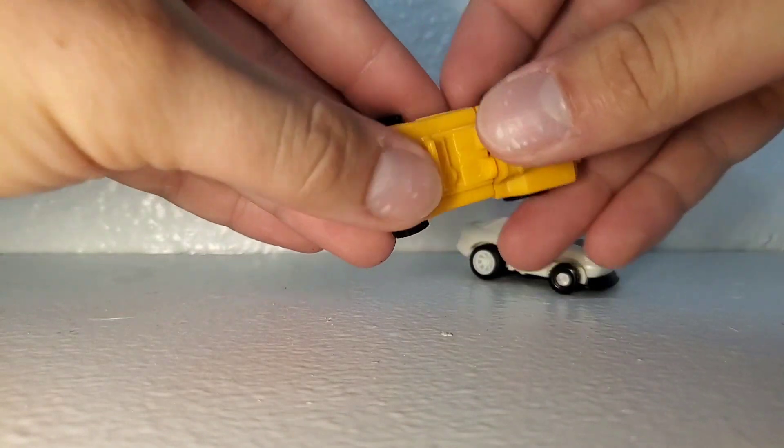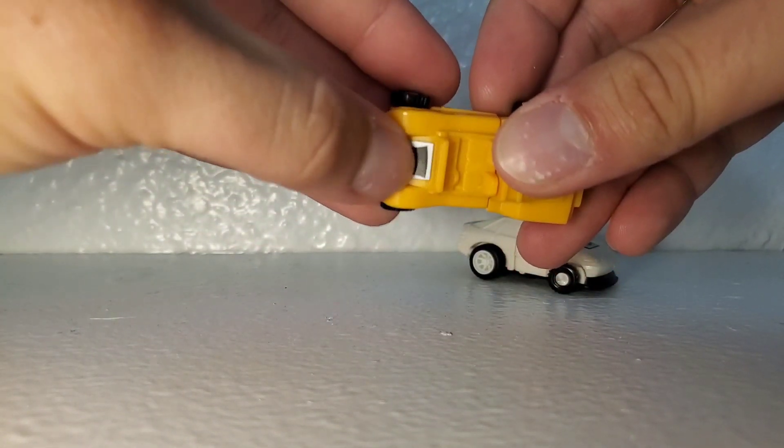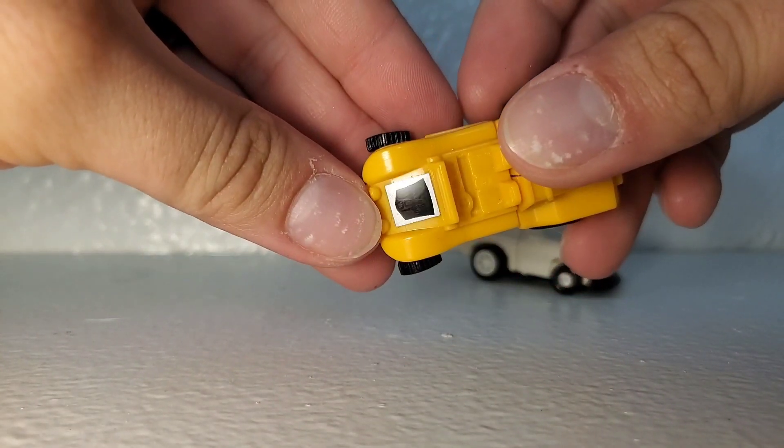And then this one is also an Autobot. So if we got time in the day for me to rub this for 20 minutes, then you'll see that this is also an Autobot. There we go.